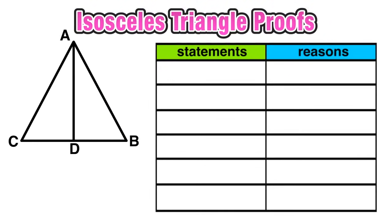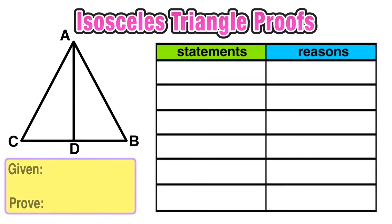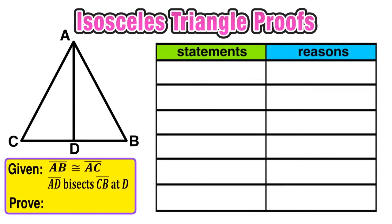So every proof has in common these things: they all have a diagram, a statement and reason table, some given information, and something that you have to prove. The strategy here is to take that given information, apply what you know already about geometry to that information, and put it together to make a formal argument that proves whatever they're asking you to prove. In this case, that angle C is congruent to angle B — that they have the same measure.